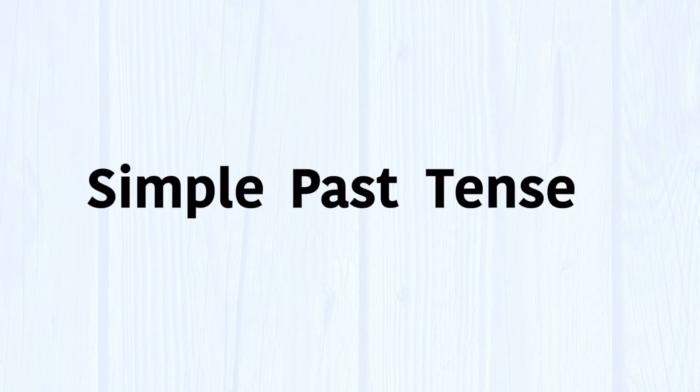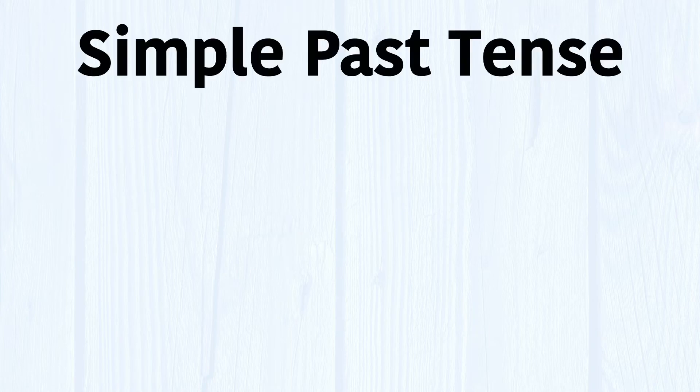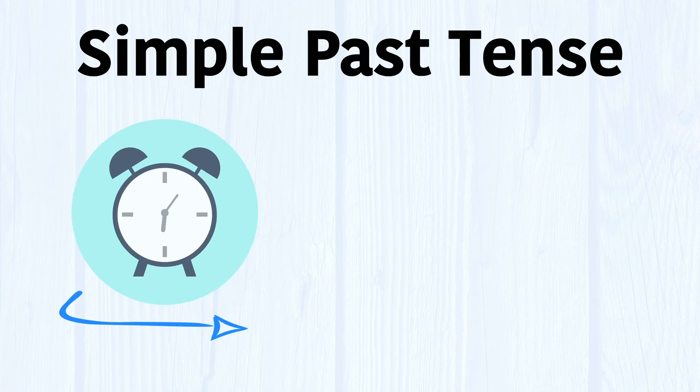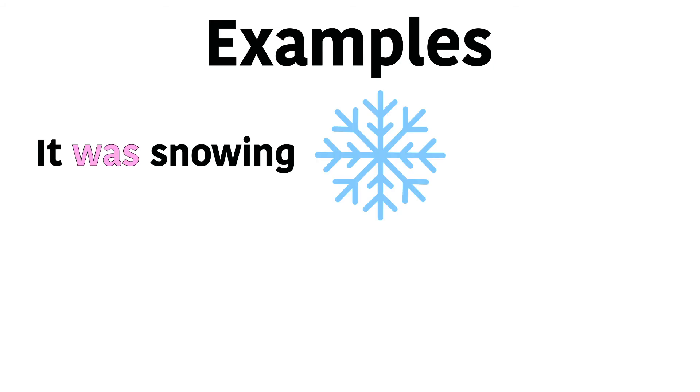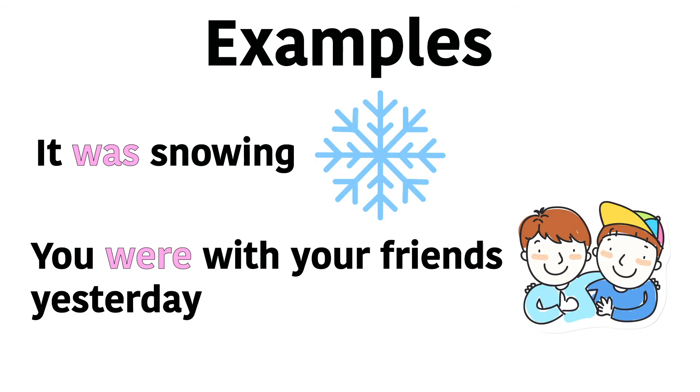The last two forms of the verb to be that you need to know are in the simple past tense, and they are was and were. Was is used for the subjects I, he, she, and it. Were is used for the subjects you, they, and we. Just know that if you want to talk about the past and you're describing something, you would use these words. For example: it was snowing, and you were with your friends yesterday.